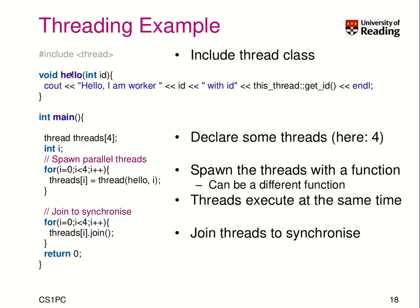Let's do a little example for threading. First, we include the thread header from the standard library. In the main function, we want to create four threads, represented by the class 'thread', stored in a variable called 'threads'. We need to spawn the threads so they can execute concurrently by calling the constructor of thread, which acts as a factory method. We specify the function 'hello' as the work to execute in each thread, and provide the argument 'i' as the thread number.